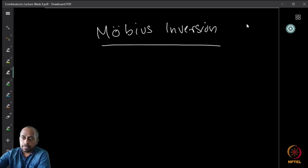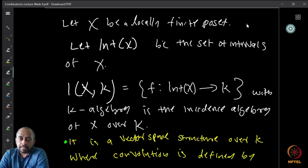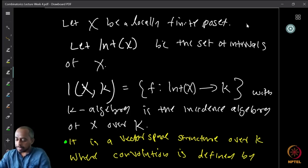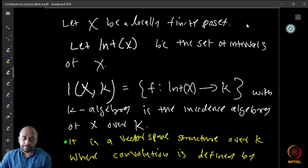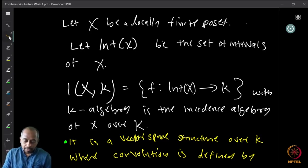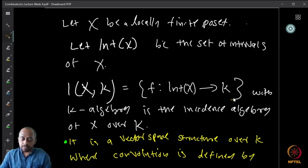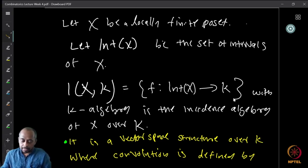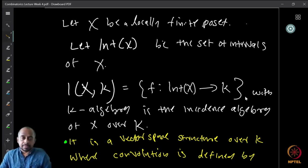To recall, we said that a partially ordered set is locally finite if all its intervals are finite. Now let us look at the set of all intervals of a poset X, denoted by Int(X). Consider the set of all functions from Int(X) to some field K. This set is denoted by I(X, K), and together with the algebra that comes from the field — the K-algebra — this is called the incidence algebra of the partially ordered set X over the field K.